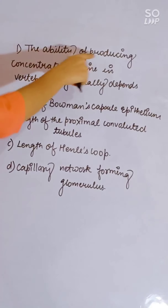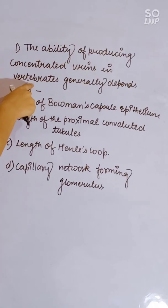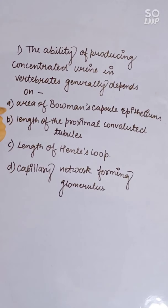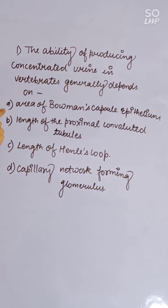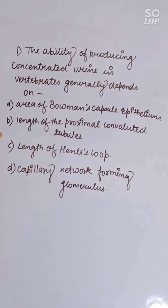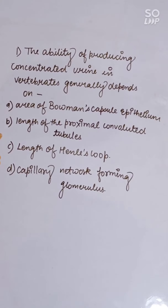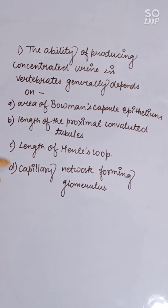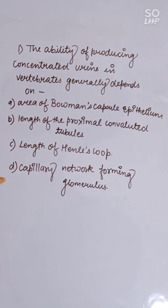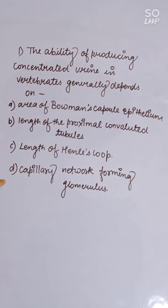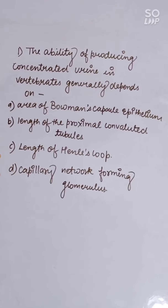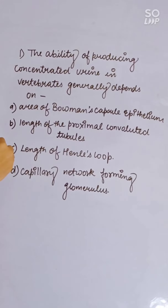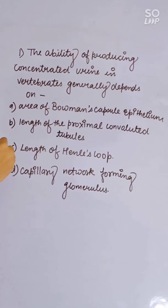The ability of producing concentrated urine in vertebrates generally depends on: area of Bowman's capsule epithelium, length of proximal convoluted tubules, length of Henle's loop, or capillary network forming glomerulus. Correct answer is length of Henle's loop.